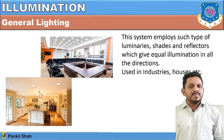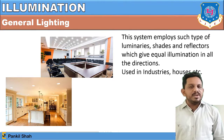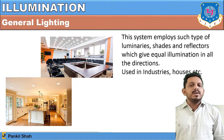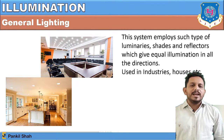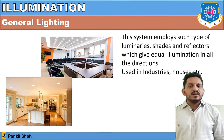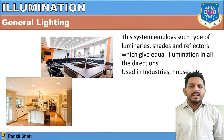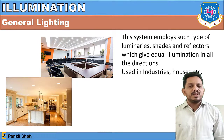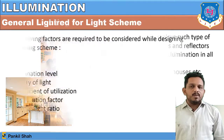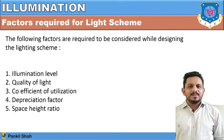In general lighting, reflectors are used which give equal illumination in all directions. This is the normal, general type of lighting that provides equal illumination all around. It is used generally in industries, houses, and normal domestic applications.